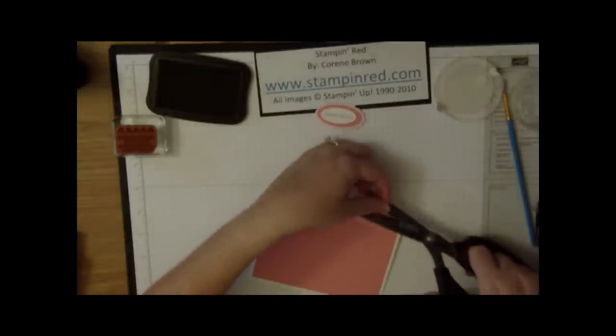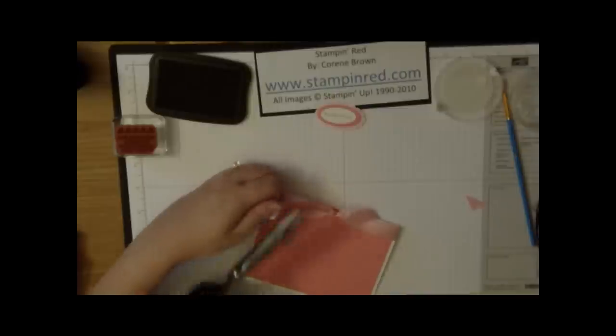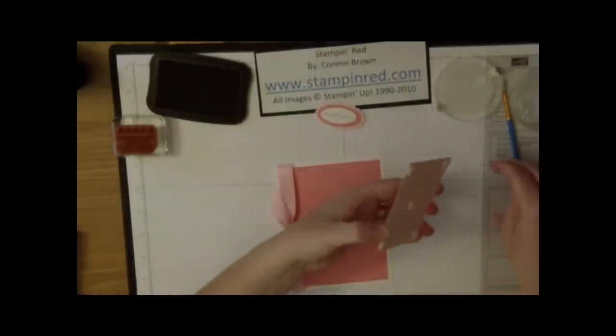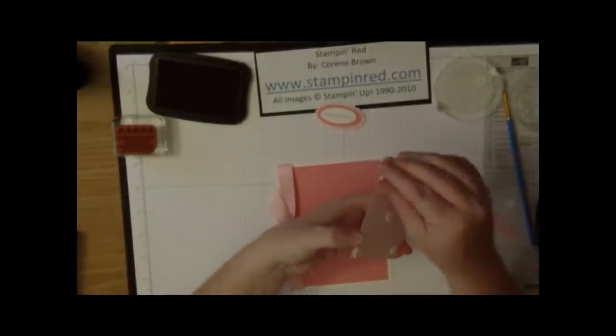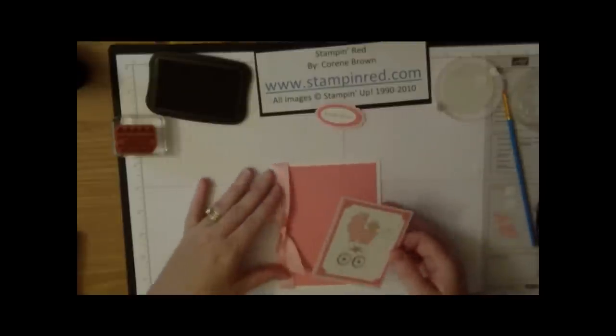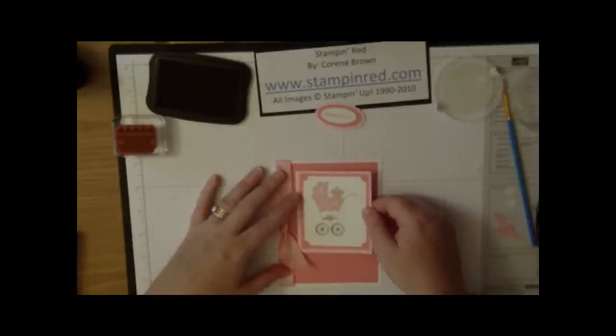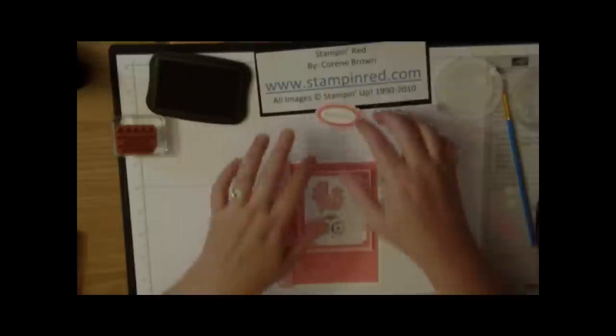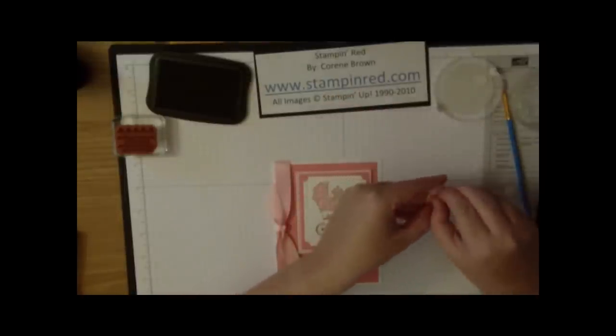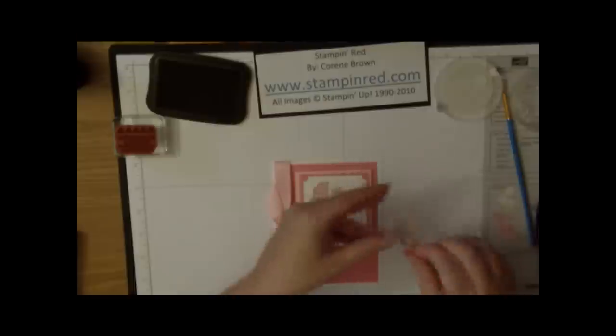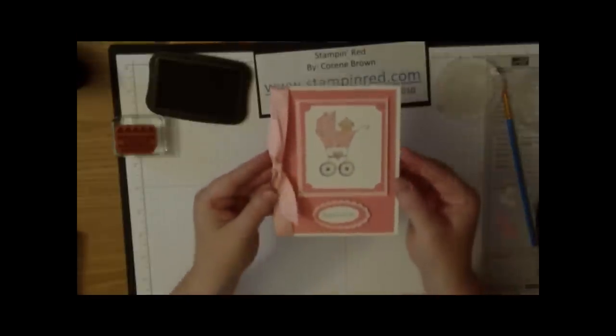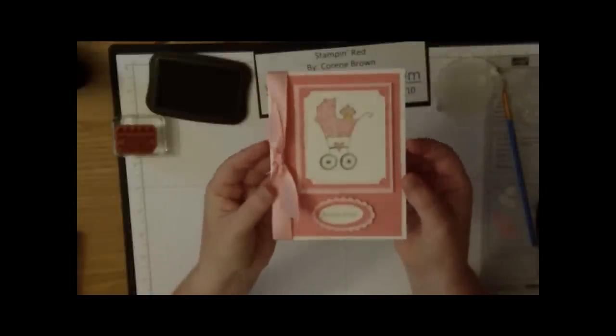And then trim the edges. And then all we have to do is just add our little pieces. We take off our dimensional backings and we lay that right here on the front of the card. And our little Bundle of Love, right there. And there you go. Hope you enjoyed the card. See you next time.